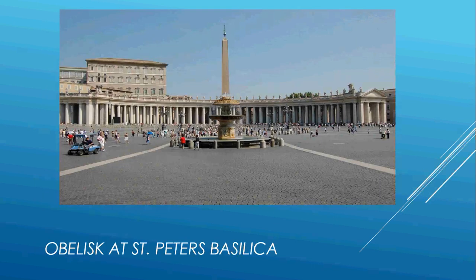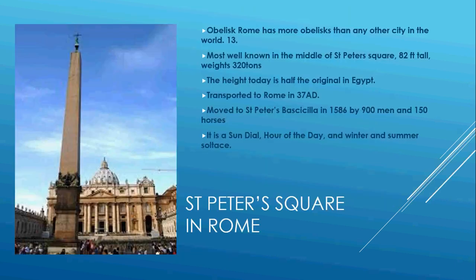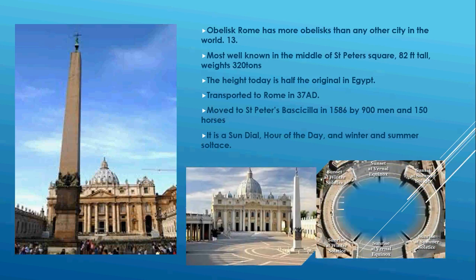Here is an obelisk at St. Peter's Basilica in Rome. Rome has more obelisks than any other city in the world — 13 in total. The most well-known is in St. Peter's Square, 82 feet tall, which is only the height of what the original was in Egypt. It was transported to Rome in 37 AD. It also functions as a sundial — it can tell the time of day and shows the winter solstice by the shadow of the sun.